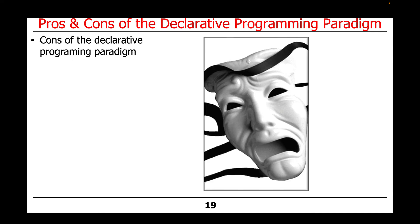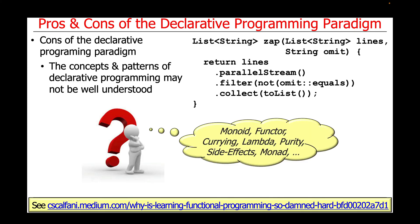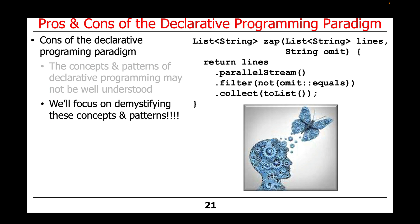Of course, there are some downsides to the declarative programming model. The most obvious is that the concepts and patterns of declarative programming may not be well understood. If you read about functional programming, you'll encounter terms like monoids, functors, currying, lambda expressions, pure functions, side effects, and monads — and these things can sound rather baffling at first glance. The goal throughout the rest of this material is to focus on demystifying the concepts and patterns of functional programming in a declarative model using modern Java features.